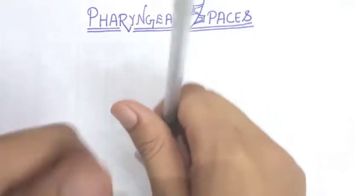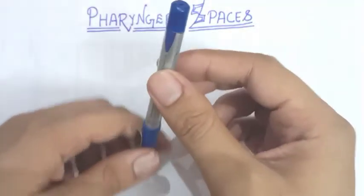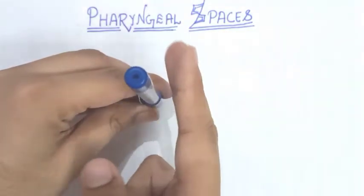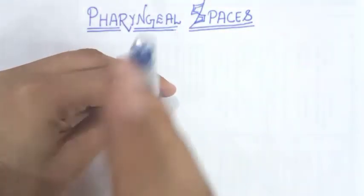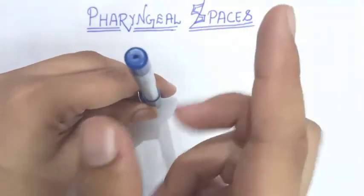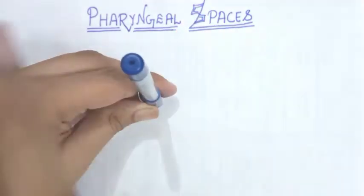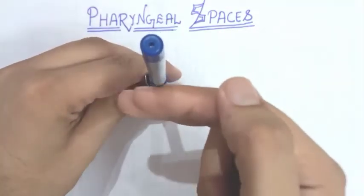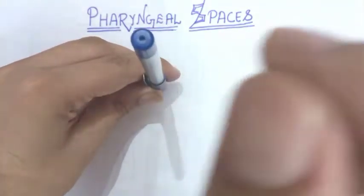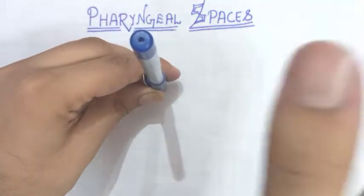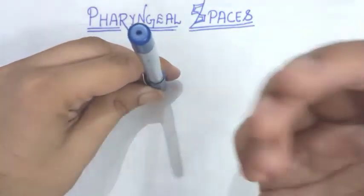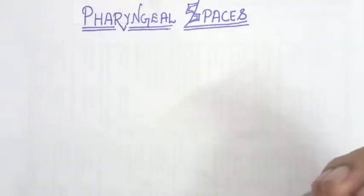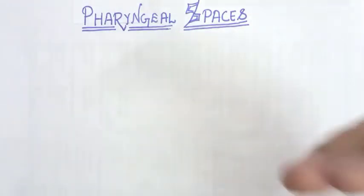These are the spaces present around the pharynx. Imagine this plane as a pharynx — the pharynx is present vertically. There are some spaces around the sides of the pharynx which are called the lateral pharyngeal spaces, because they are present on the sides. And the space situated behind the pharynx is called the retropharyngeal space. The word retro means behind. In order to have a good view of the topic, let's draw a diagram.